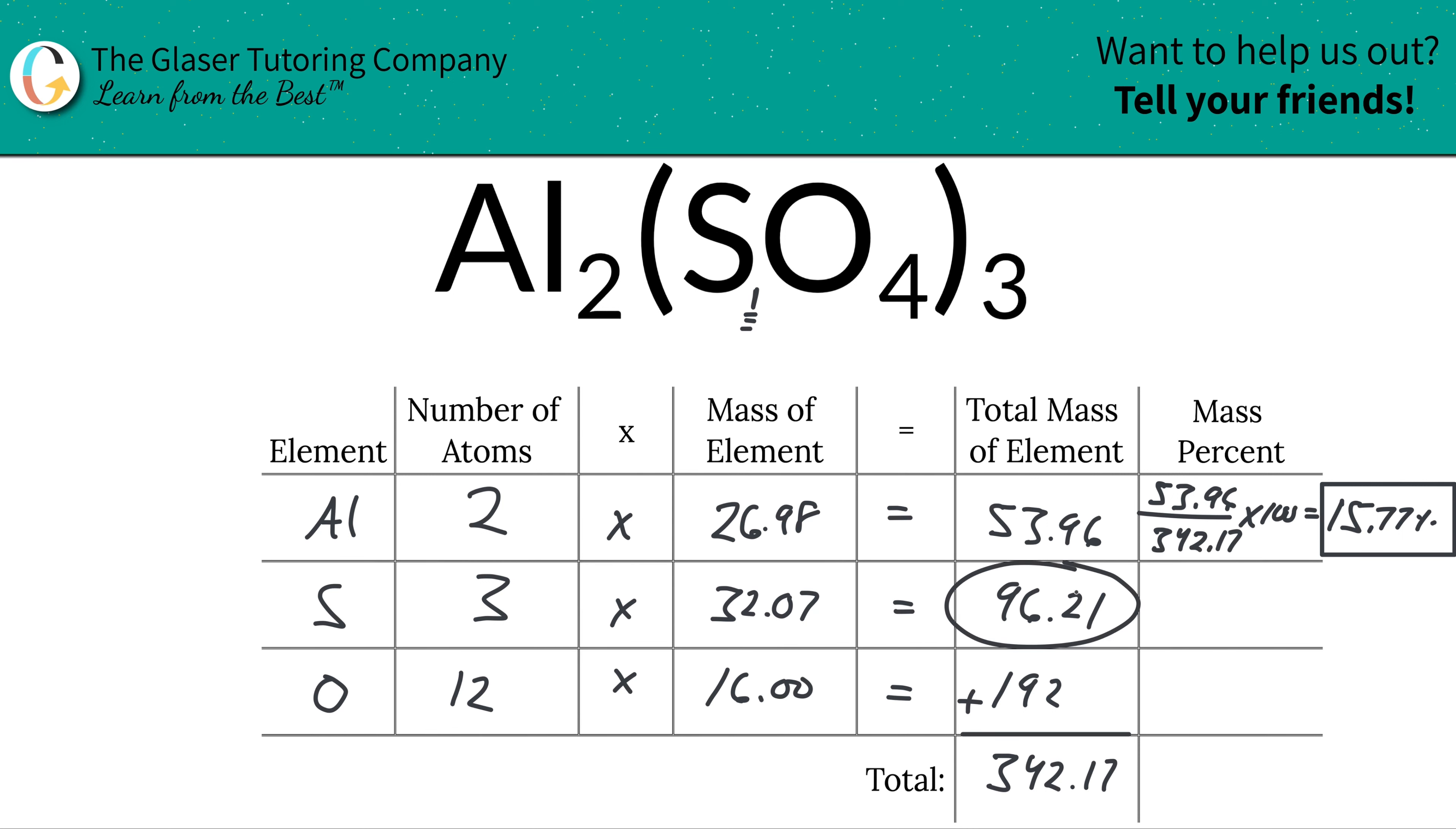Next, we would do the same thing for sulfur. We're going to take this value and divide it by the total mass of the compound and then multiply it by 100 to find the percent. So when you do that, it's going to work out to be about 28.12%. It's the same exact calculation as before. The only difference is this value. I'm just going to plug in the 96.21 for it.